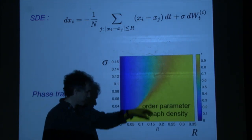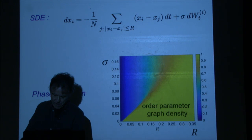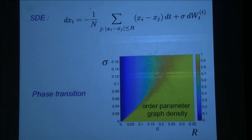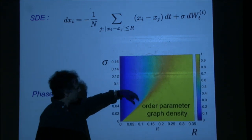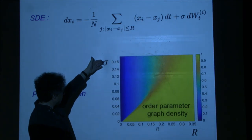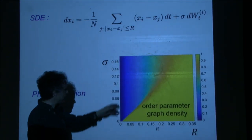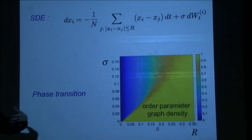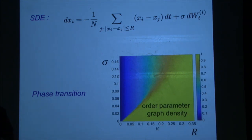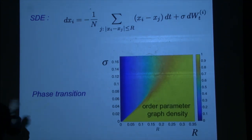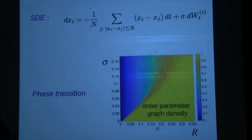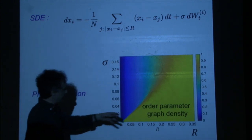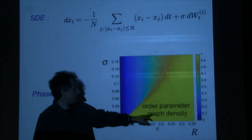If we take as an order parameter the graph density — the number of edges — that gives a certain parameter you can study in heat maps as a function of the noise sigma and the radius r. Sigma and r pull in opposite directions: the bigger r is, the more you pull things together; the bigger sigma is, the more noise there is and things want to escape.